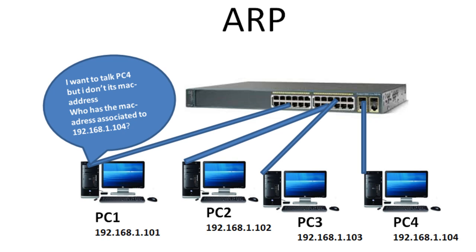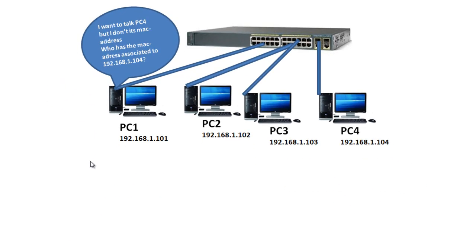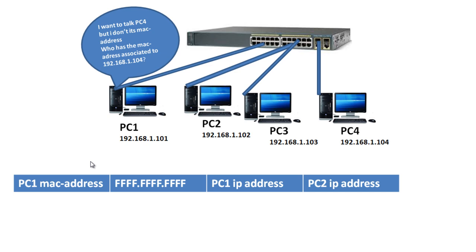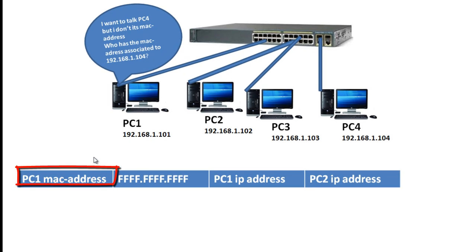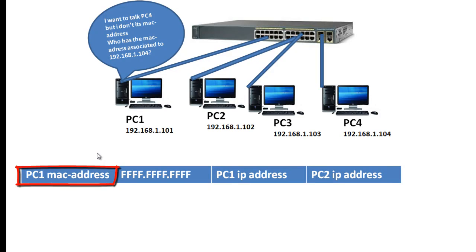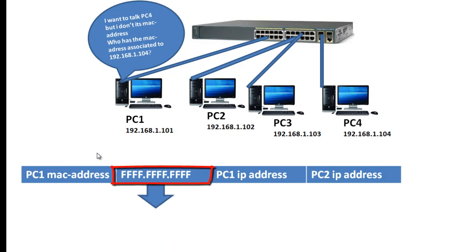The switch will see the ARP request as a frame. This ARP request will contain PC1's MAC address as the source MAC address, and a MAC address with all F's as the destination MAC address, because PC1 doesn't know the MAC address of PC4. That's the reason why the destination address is by default all F's — this is what we call a broadcast address.